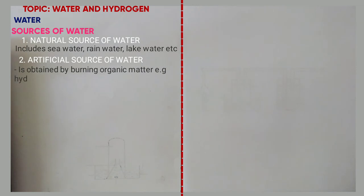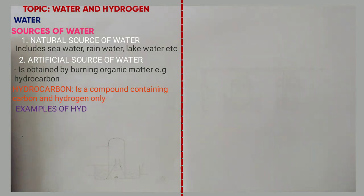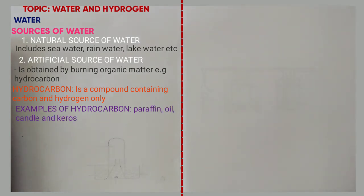What is a hydrocarbon? A hydrocarbon is a compound containing carbon and hydrogen only. Examples include paraffin, oil, candle, and kerosene. Now when hydrocarbons are burned in air,